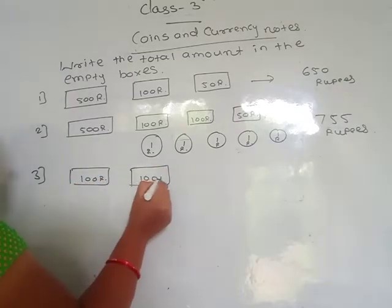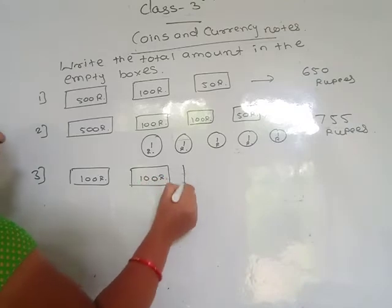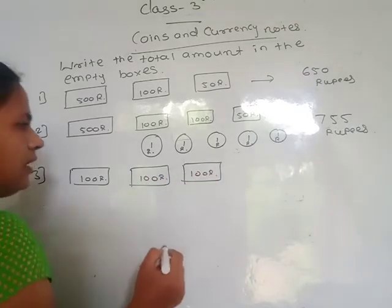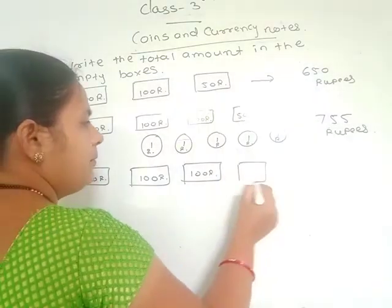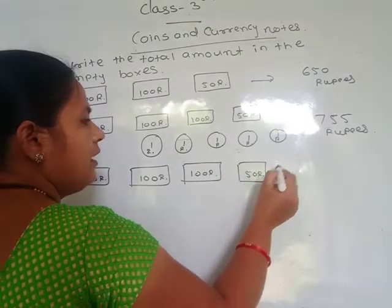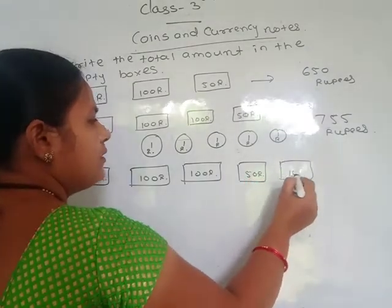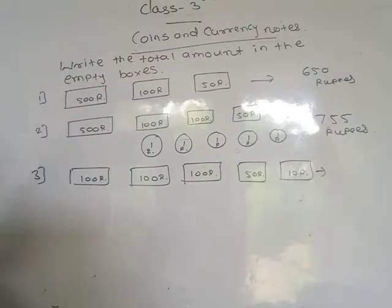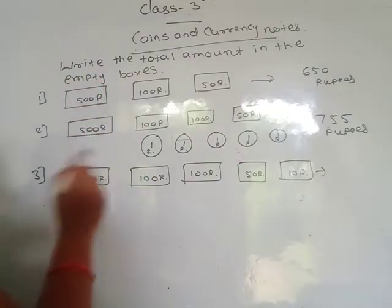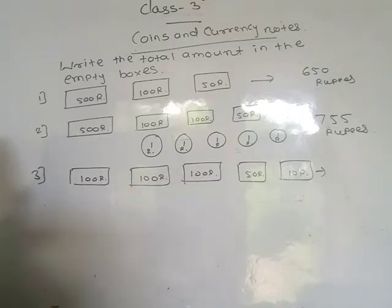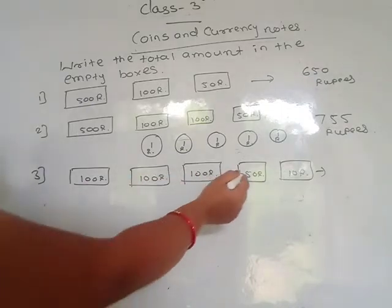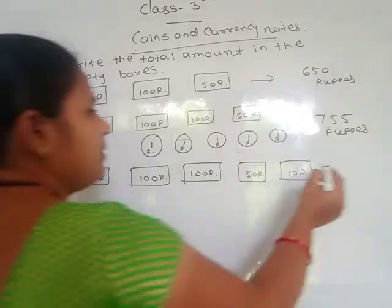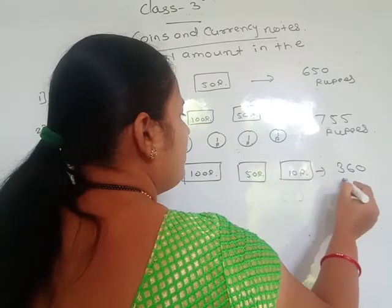Third one: here 100 rupees, 100 rupees, 100 rupees — 3 notes of 100 rupees — then one 50 rupees note and one 10 rupees note. Count the total: 100 plus 100 is 200, plus 100 is 300, plus 50 is 350, and this 10 is 360 rupees.